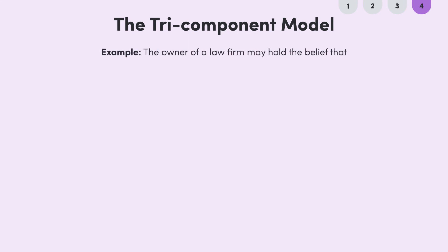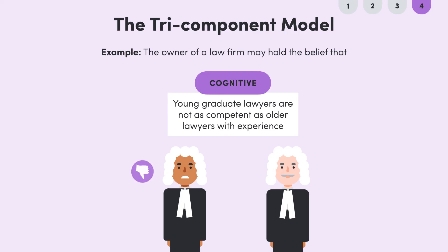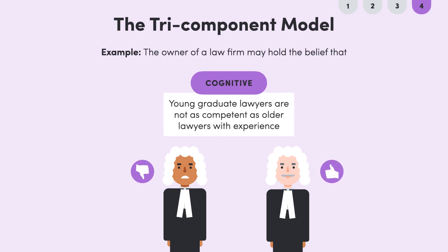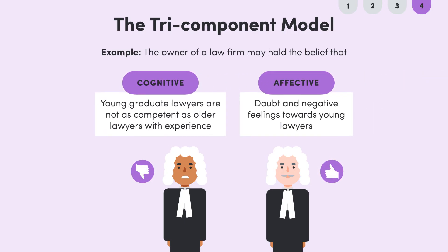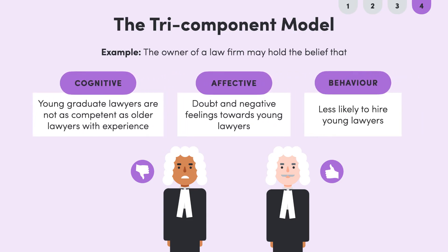For example, the owner of a law firm may hold the belief that young graduate lawyers are not as competent as experienced lawyers — this is the cognitive component. They may doubt and have negative feelings towards young lawyers who apply for a job, which is the affective component. This then influences behavior, so they're less likely to hire young lawyers.